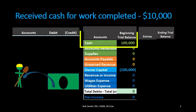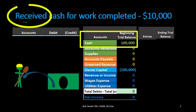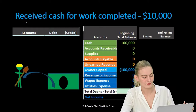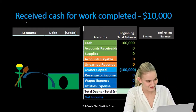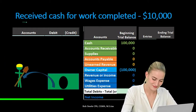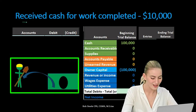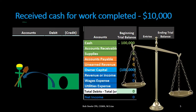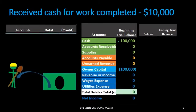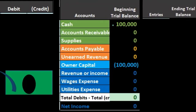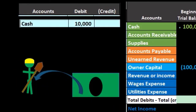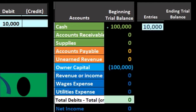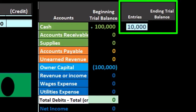Next transaction: receive cash for work completed. First question — is cash affected? Yes, the keyword is 'received.' Is cash going up or down? It's going up because we received cash. Cash has a debit normal balance, so to make it go up we do the same thing — another debit. If we post that out, the 10,000 increases the debit balance to 110,000.